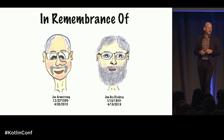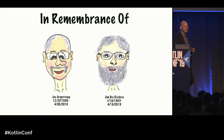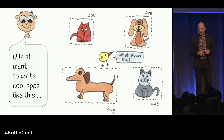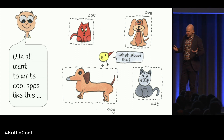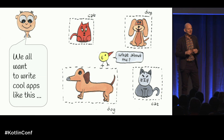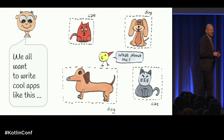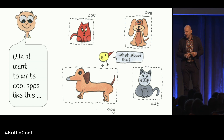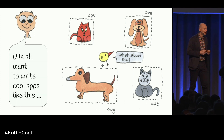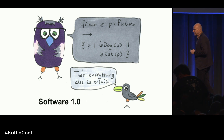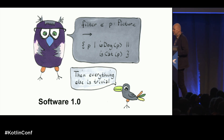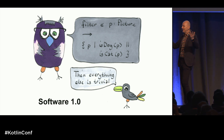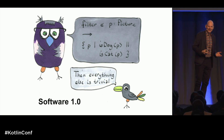One way that I enjoy myself is by trying to take complicated mathematics and turn that into code. I will take you on this journey today. We'll look at some fun mathematics and see how we can turn this into beautiful Kotlin. These days, we all want to write cool apps that take some pictures and predict what is in that picture, whether it's cats or dogs. The question is, how do you write apps like that?